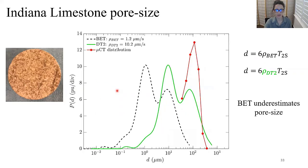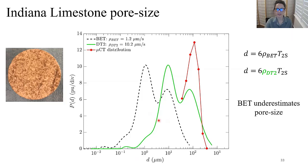For the Indiana Limestone pore size distribution: the black dashed line uses surface relaxivity from BET; green uses the roughness-independent ρ from DT2; red is from micro-CT. The micro-CT indicates large pore sizes around 100 micrometers, agreeing with the DT2 result. However, this is ten times larger than the pore size derived from BET — BET underestimates pore size due to surface roughness. The CT pore size distribution also misses micropores due to insufficient CT resolution.